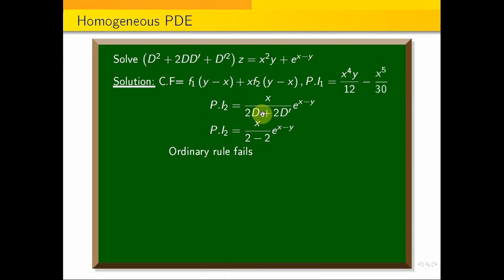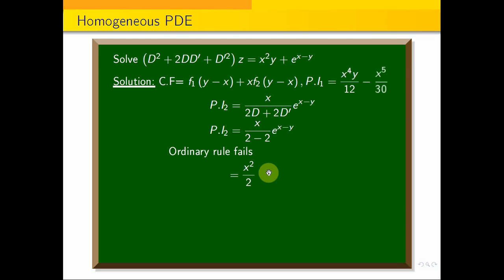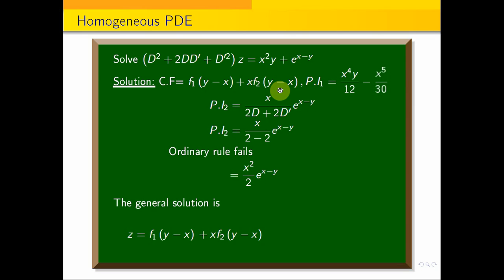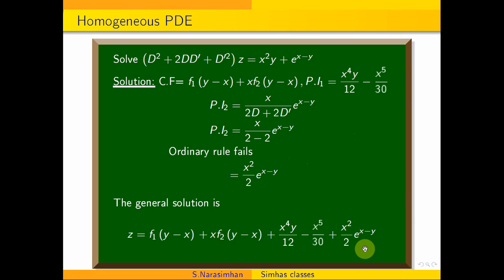Since the denominator is 0 again, we apply the procedure a second time: multiply x² in the numerator and differentiate once more, giving the constant 2 in the denominator. So PI₂ = x²/2 · e^(x−y). Therefore the general solution is: z = CF + PI₁ + PI₂ = f₁(y − x) + x·f₂(y − x) + x⁴y/12 − x⁵/30 + (x²/2)·e^(x−y).